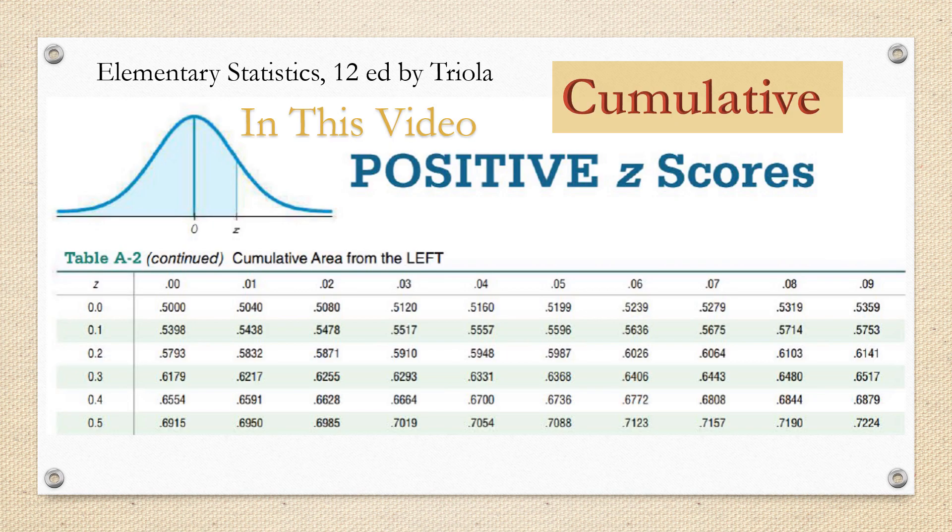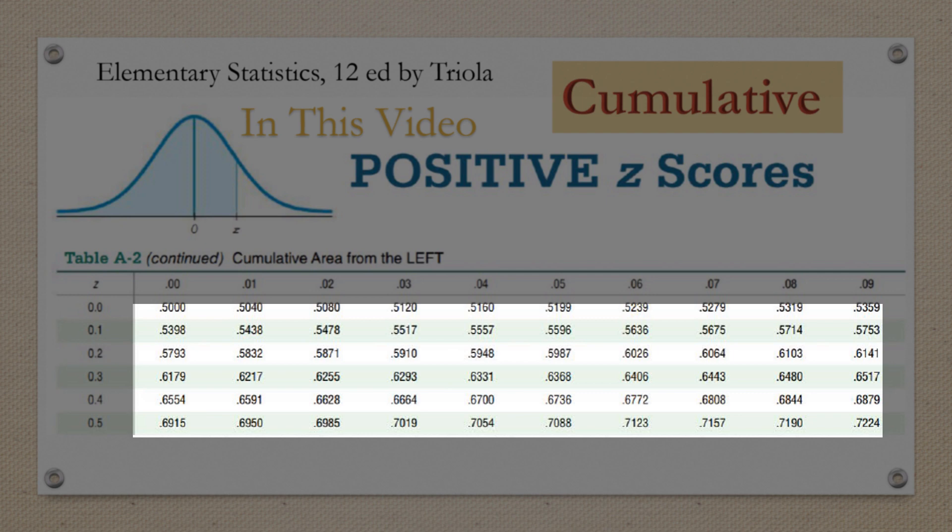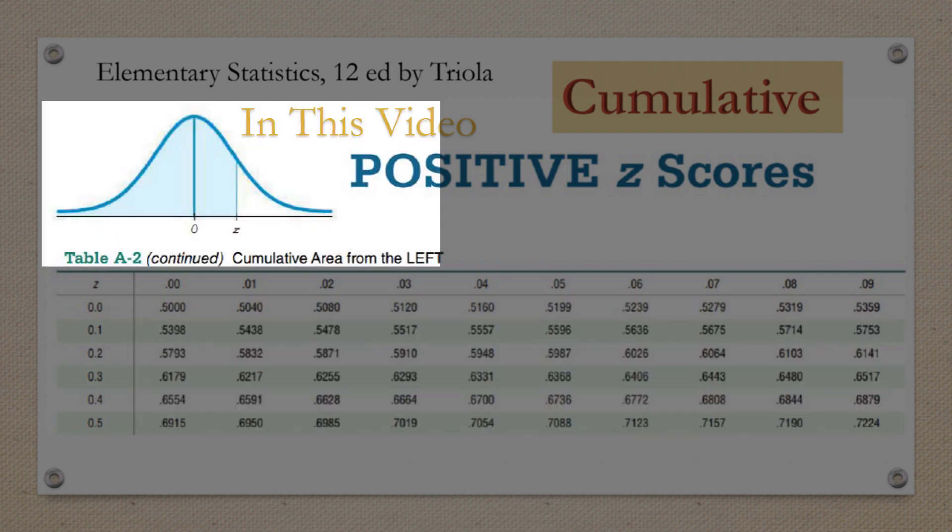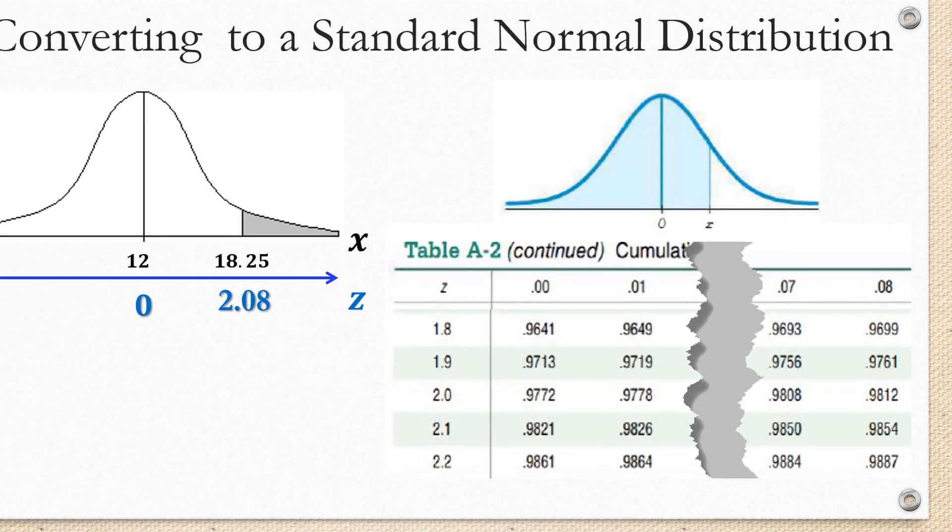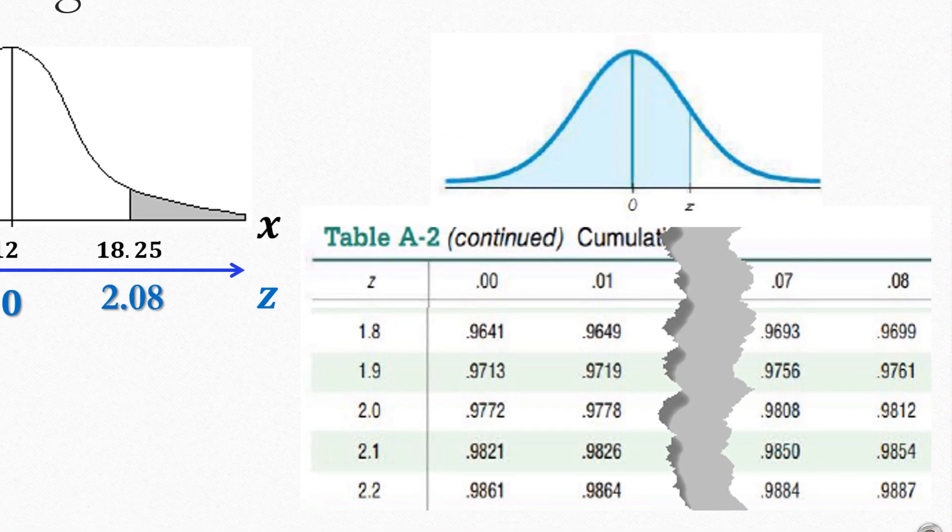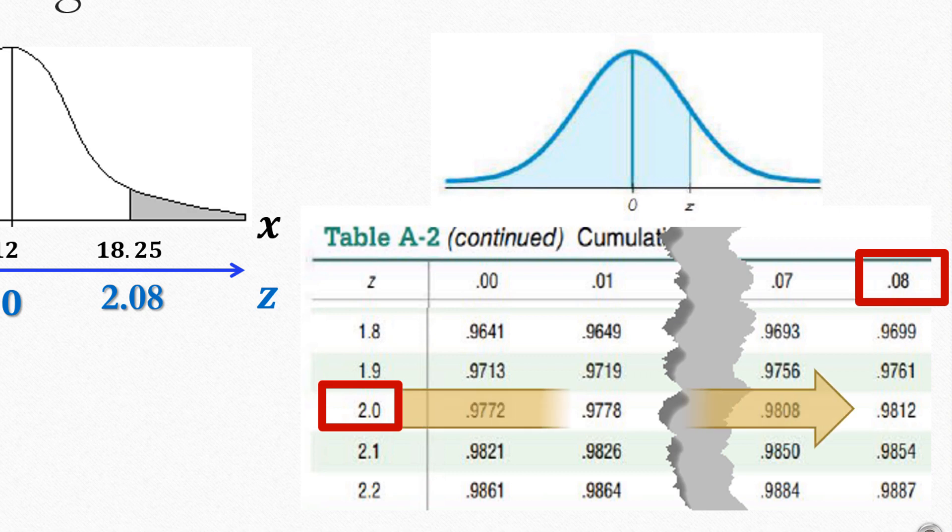In this video, we're going to look at a cumulative z-table. So the areas that are listed in the table are going to represent the cumulative area to the left of z. So in our example, where we had a z-score of 2.08, we're going to find 2.0. And across the top, we're going to get the second decimal place, which is 8. So that together makes 2.08. And then we're going to look across and down.